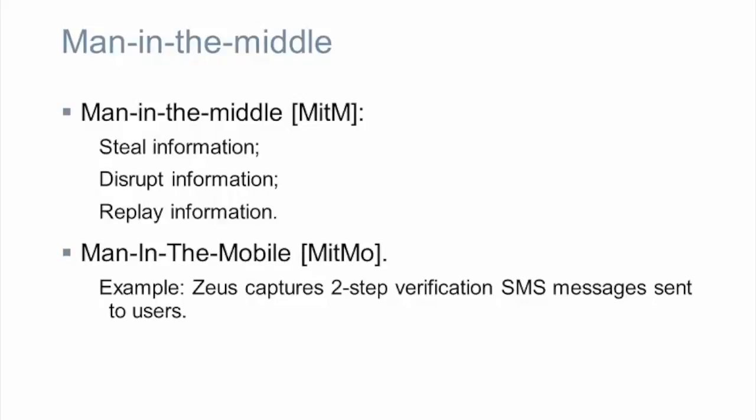Man-in-the-middle attacks can be created in many ways. They allow interception of all traffic going from and destined to a victim host. The attacker can do anything with that traffic — steal information from it, disrupt information, or send it to a black hole to create a network Denial of Service of the victim, or even use messages, such as authentication messages, to replay them and bypass security mechanisms. Also, man-in-the-middle attacks for mobile phones exist. For example, malware can capture two-step verification SMS messages sent to users and then send them to the attacker.